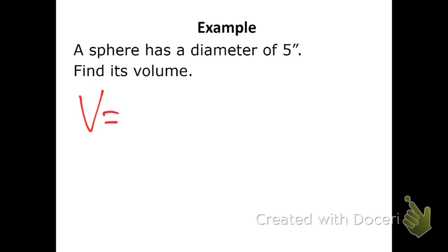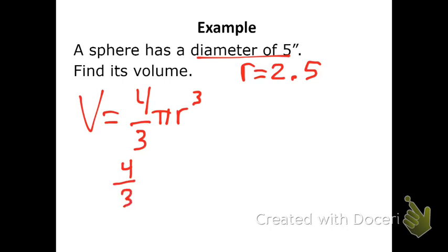So, volume is 4/3 π r³. Diameter is 5, which means the radius is 2.5. So I'm just going to plug that in for r.